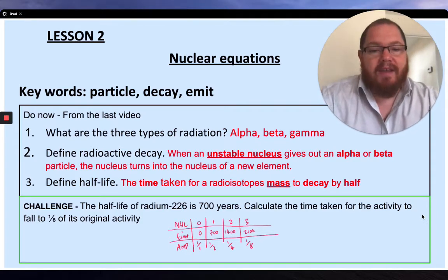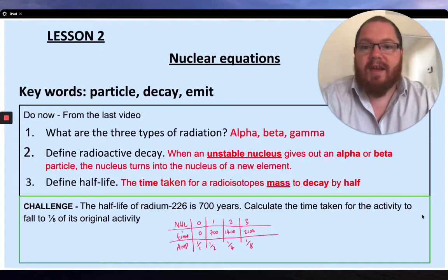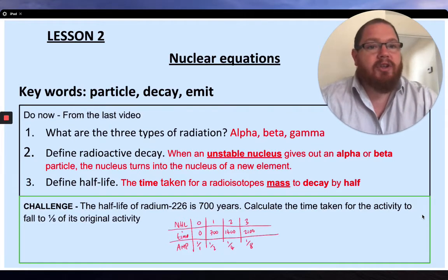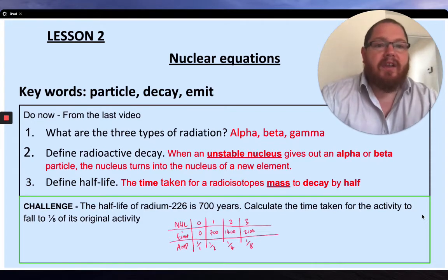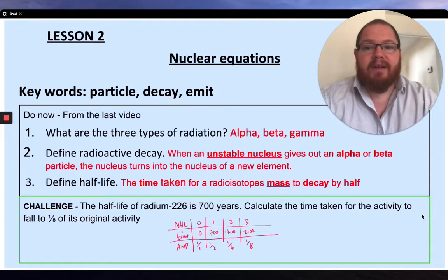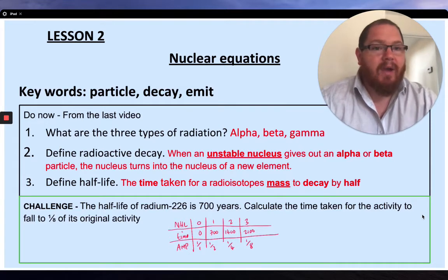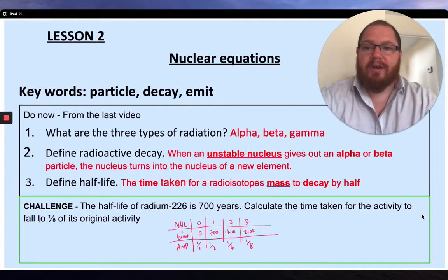Define radioactive decay - common question in an exam. When you've got unstable nucleus, or unstable nuclei, which is many nucleus, they're going to give out either alpha or beta particles, and they're going to turn into new elements. And that is essentially what we're going to be doing today. We're going to be doing that in the form of nuclear equations.